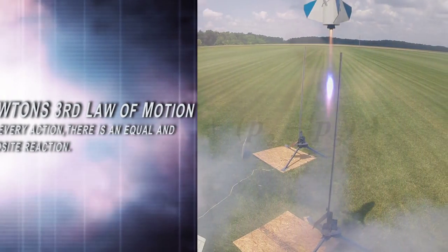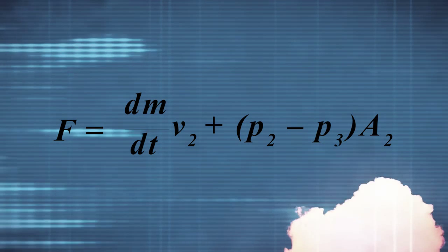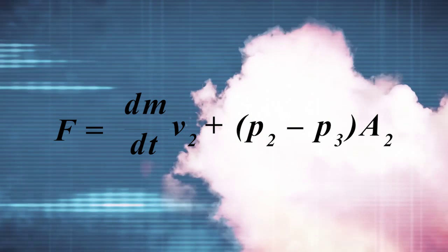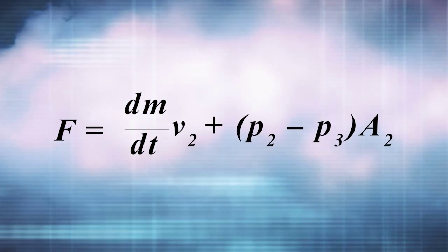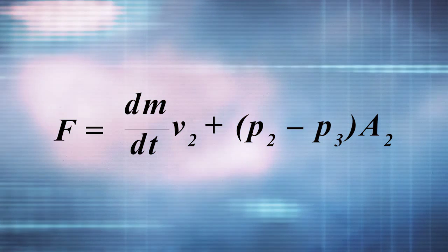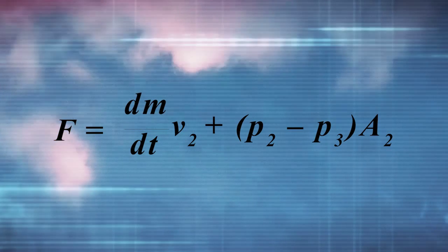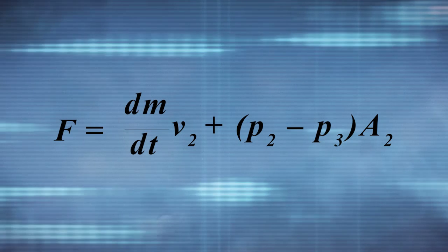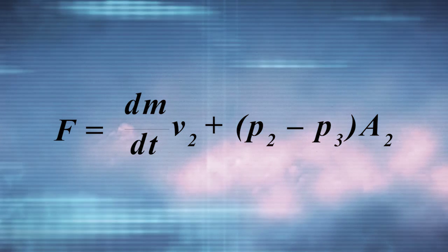Mathematically, the thrust force F can be calculated by examining the change in momentum of the expelled gases, the pressure of the gases at the exit nozzle, the ambient pressure outside of the nozzle, and the area of the nozzle exit. Where dm/dt is the change in mass per unit time of the rocket propellant as it is expelled through the nozzle, V sub 2 is the velocity of the gas as it exits the nozzle, P sub 2 is the pressure at the nozzle exit, P sub 3 is the local ambient pressure outside of the propulsion system, and A sub 2 is the nozzle exit area.